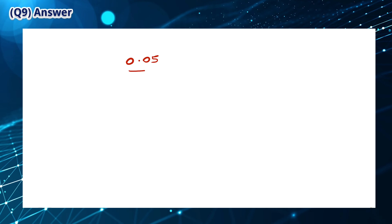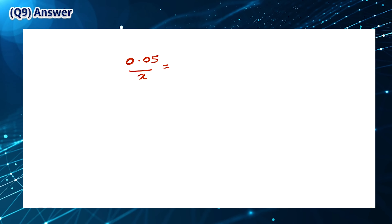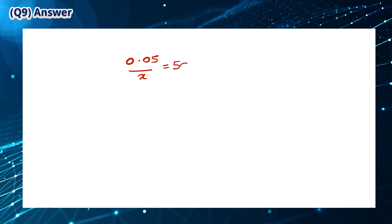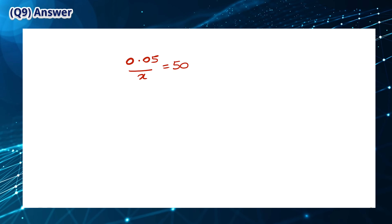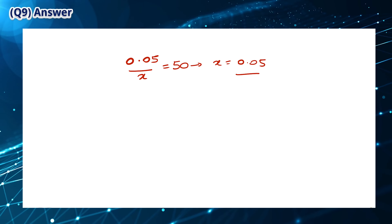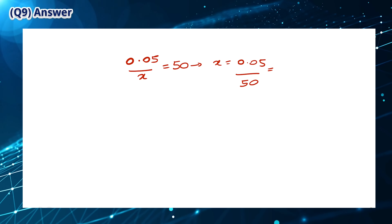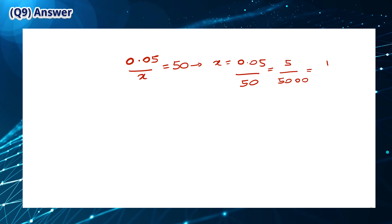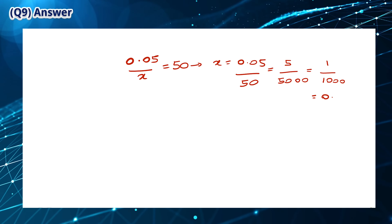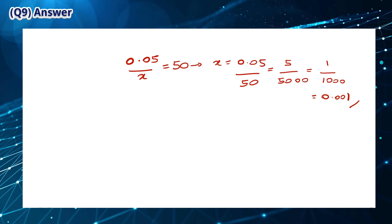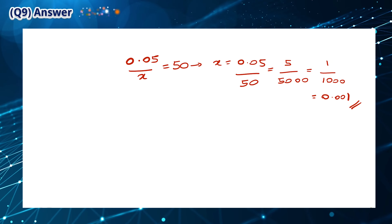Let x be the unknown divisor. We know that 0.05 divided by x is equal to 50. We can solve this equation to find that x is equal to 1 over 1000, which is equal to 0.001. This means that the answer is D.